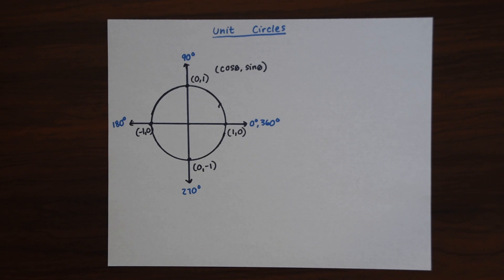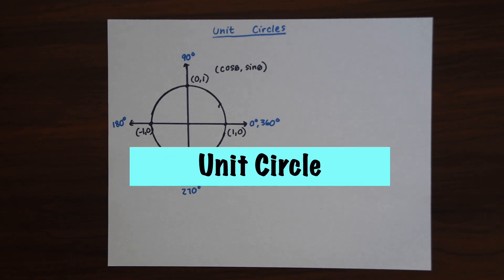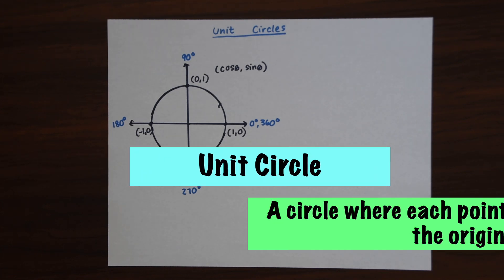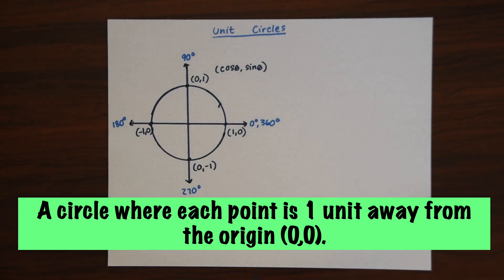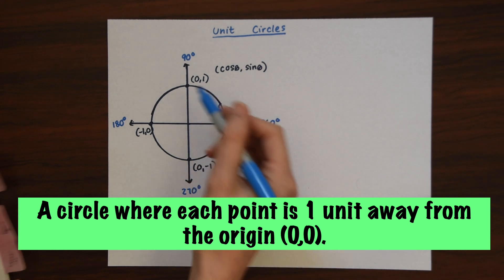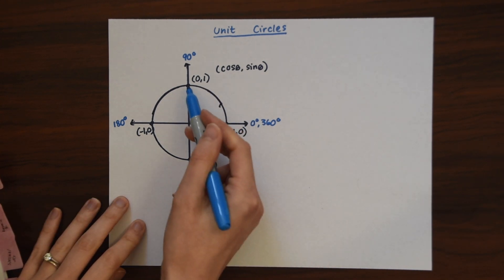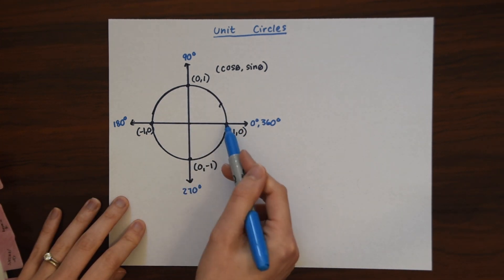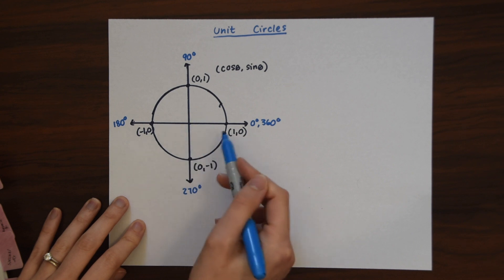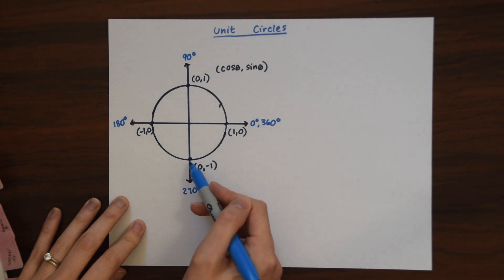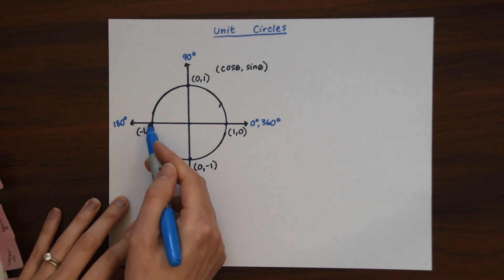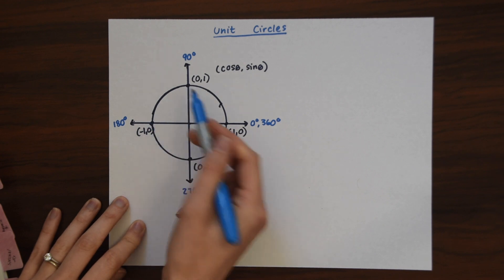So what is the unit circle? The unit circle is a circle where each point is one unit away from the origin (0, 0). If we look at our unit circle, we can see that each point on the diameter is one point away from the origin. So this point is (1, 0), here is (0, negative 1), (negative 1, 0), and (0, 1).